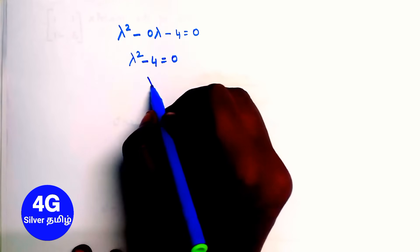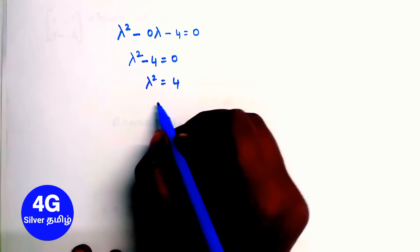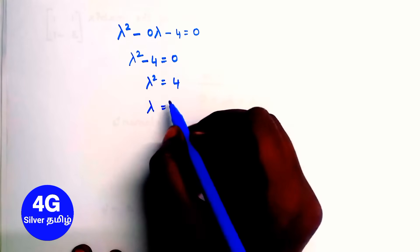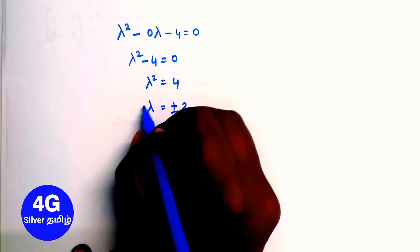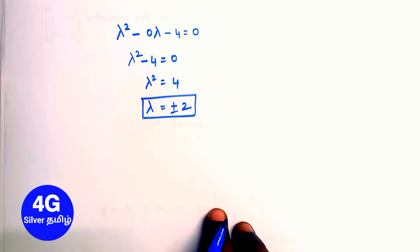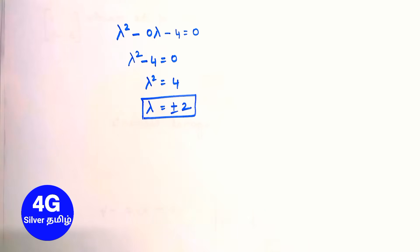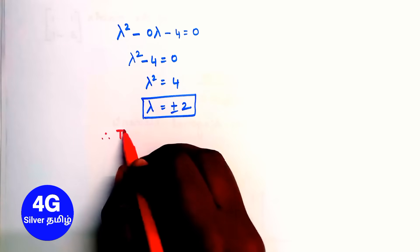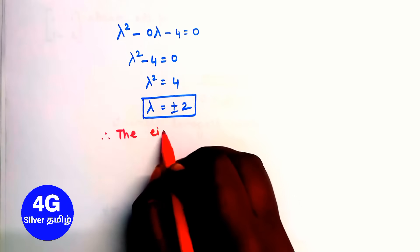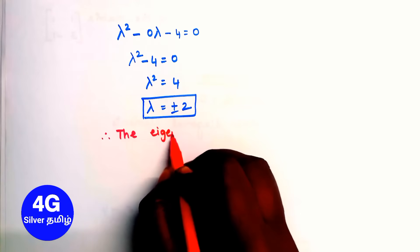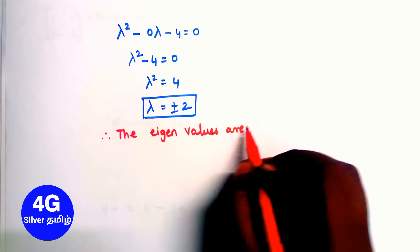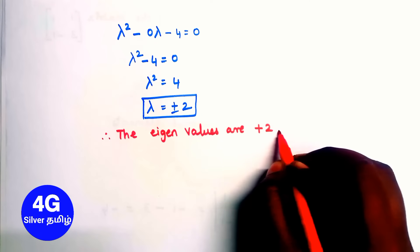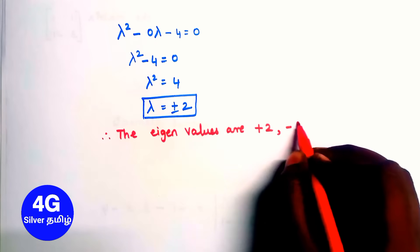From lambda squared minus 4 equals 0, we get lambda squared equals 4. Taking the square root, lambda equals plus or minus 2. Therefore the eigenvalues are plus 2 and minus 2.